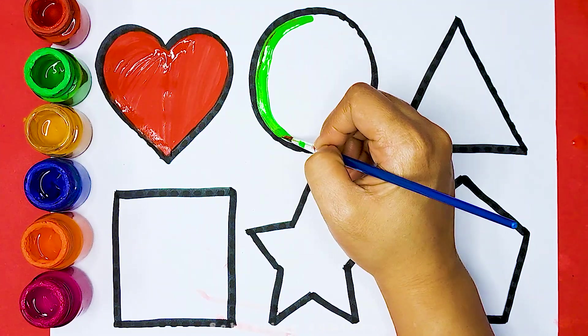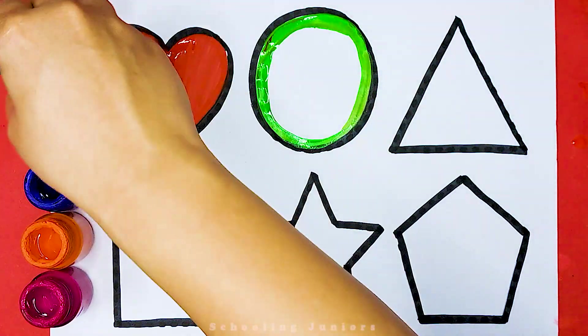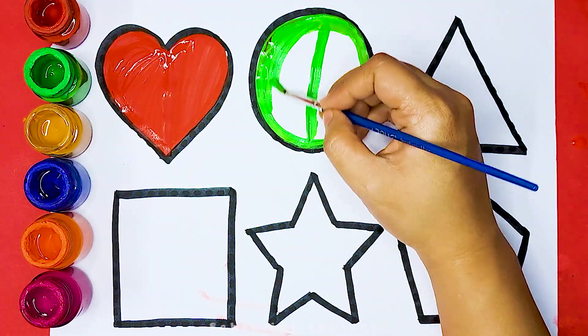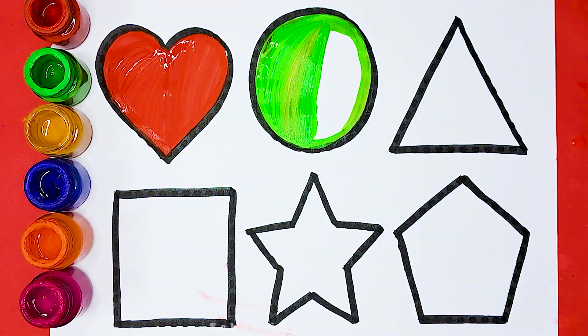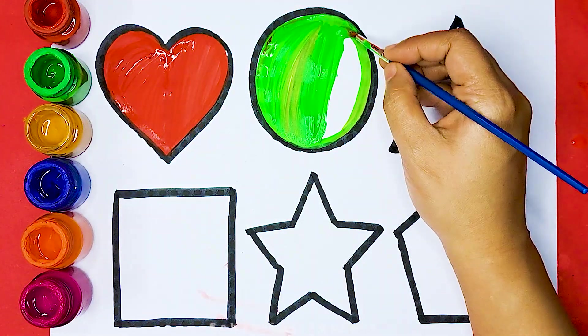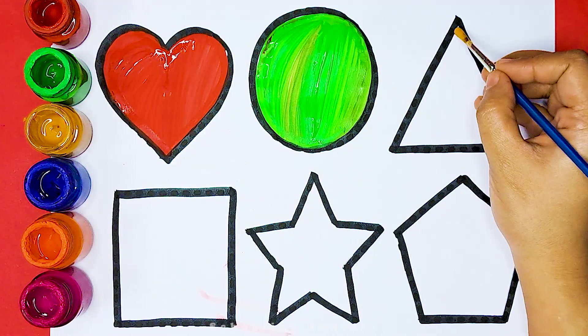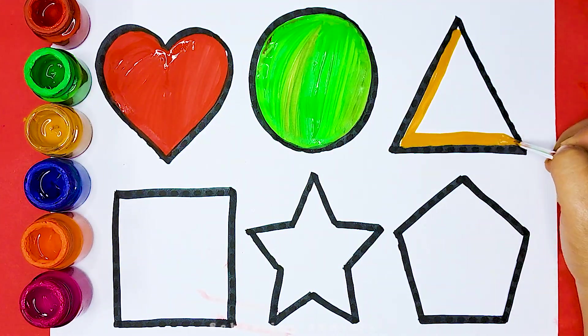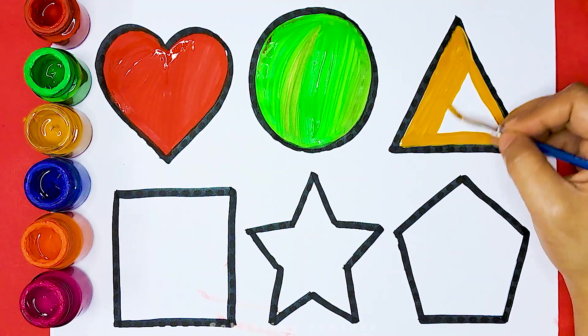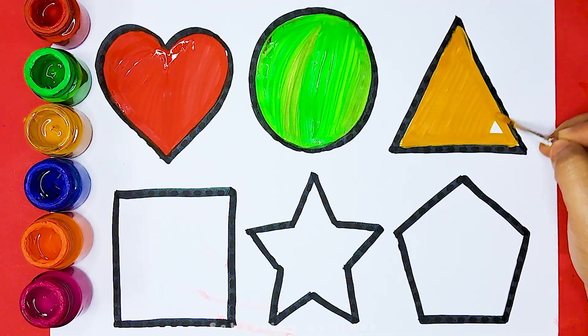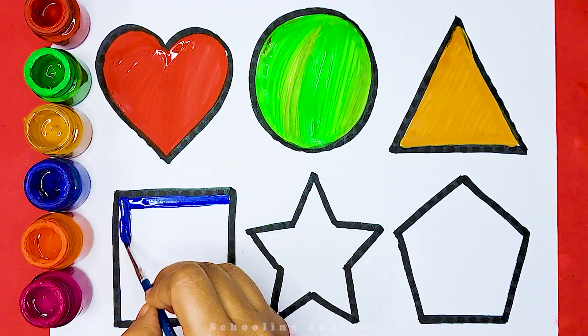Green color. Circle. Golden color. Triangle. Blue color. Square.